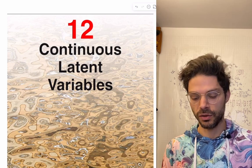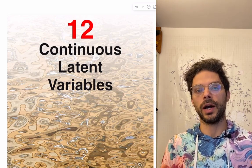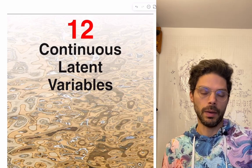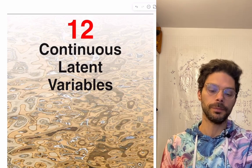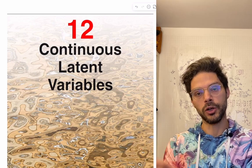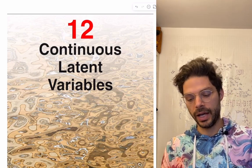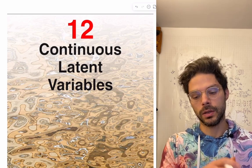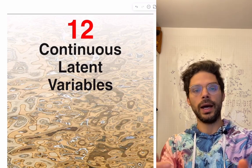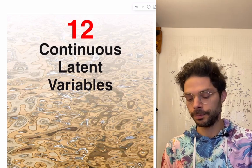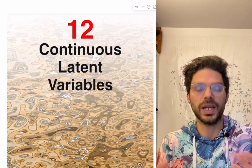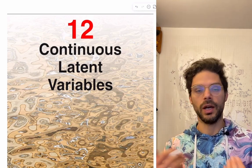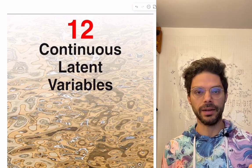Latent is just another word for hidden. The idea is you observe some set of variables and you're going to assume those variables are actually generated by a set of variables you don't observe — the latent variables. You're going to try to infer what those latent variables are and the parameters of how you go from the latent to the observed. It's often about putting statistical dependencies into those latent variables and making the mapping to the observables simpler.